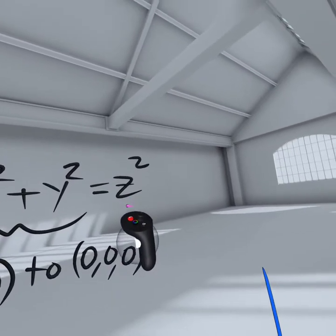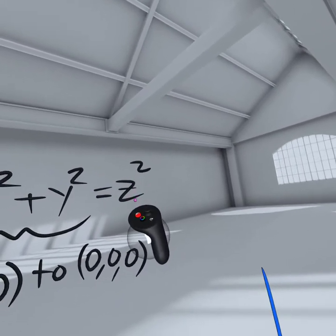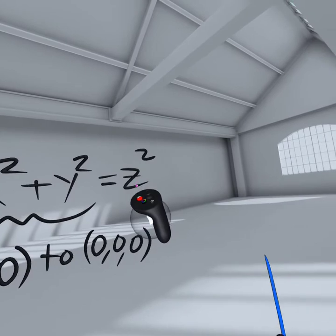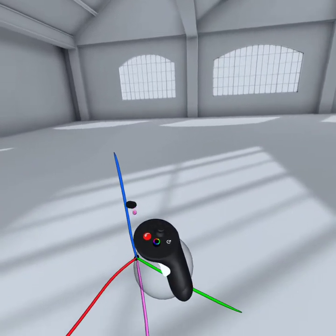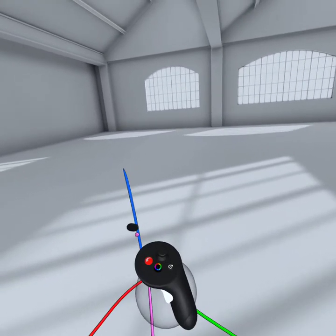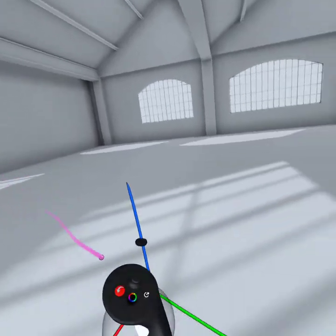On the other hand, the right-hand side is also a squared distance. It is the squared distance from that point to the x, y plane because it's just the z-coordinate squared.